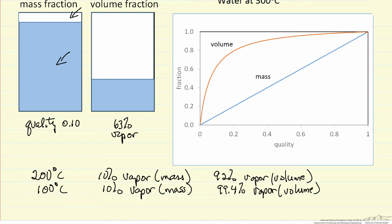So I've just listed a couple examples, and you can see as we get to lower temperatures, for example 100 degrees C, we talked about a quality of 10%, 99.4% of the volume would be occupied by vapor, and only 0.6% by liquid.